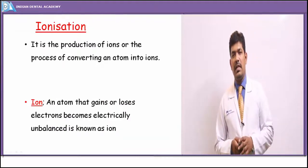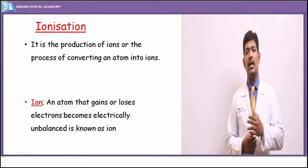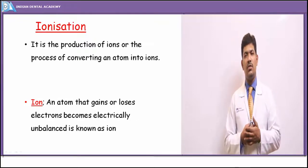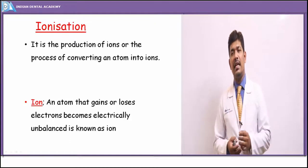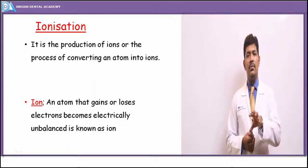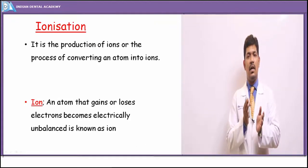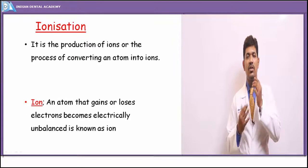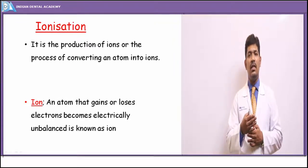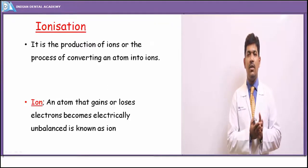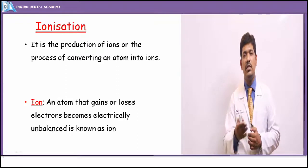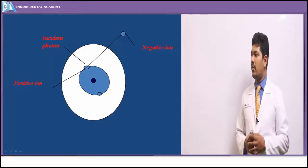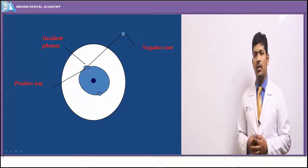Another concept important in x-ray production is ionization — any process which creates an ion. An ion may be negatively or positively charged depending on whether it has gained or lost an electron. The atom is most stable in its neutral state with equal numbers of electrons and protons. Gaining an electron creates a negative ion; losing an electron creates a positive ion.